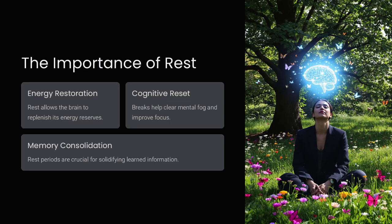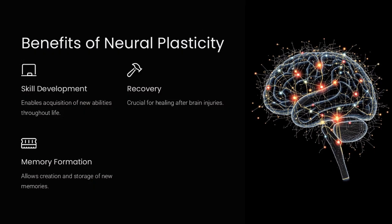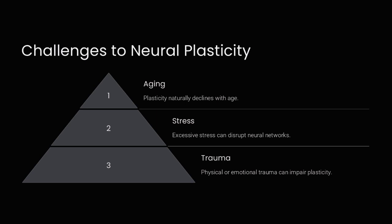Then there's the issue of energy. The brain consumes about 20% of the body's total energy, despite being only 2% of its mass. Every thought, decision, and memory retrieval requires glucose and oxygen. And there's a biological trade-off between energy efficiency and cognitive ability.